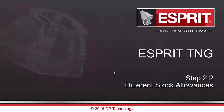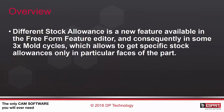Hello everybody and welcome to this Milestone presentation on what is new in Esprit G-step 2.2. Today I'm going to introduce the new different stock allowance topic. Different stock allowance is a new feature available in the freeform feature editor and consequently in some freeform free access cycles, which allows getting specific stock allowance only in particular faces of the part.